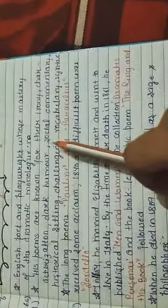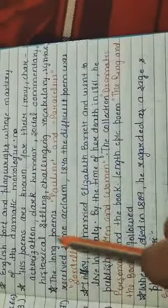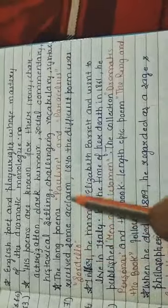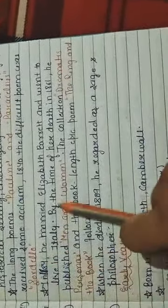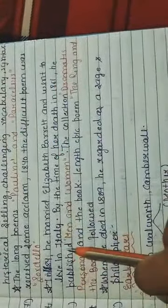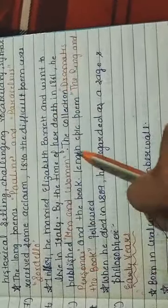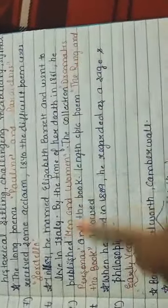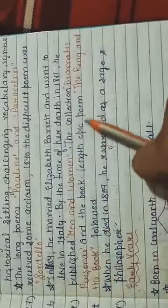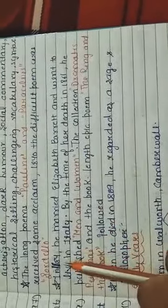His key long poems Pauline and Paracelsus received some acclaim in the 1840s. The difficult poem Sordello was written in 1840. In 1846 he married Elizabeth Barrett Browning and went to live in Italy. By the time of her death in 1861, he published Men and Women, the collection Dramatis Personae, and the book-length epic poem The Ring and the Book.